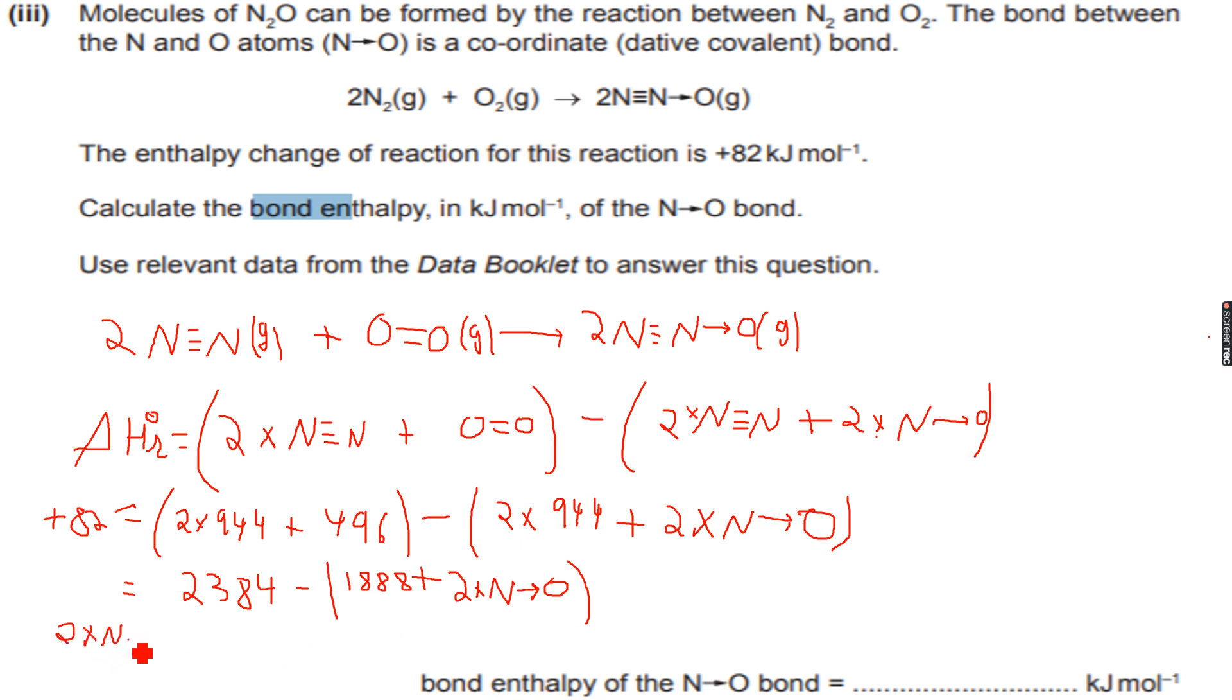I can see that 2 into NO is equal to 2384 minus 1888 minus 82. This is equal to... so 2384 minus 1888 minus 82, so this is 414. This is 414.